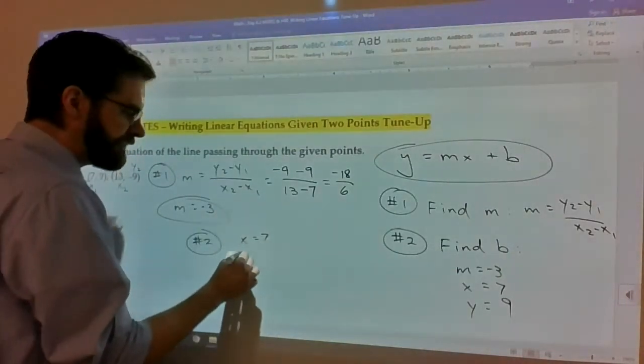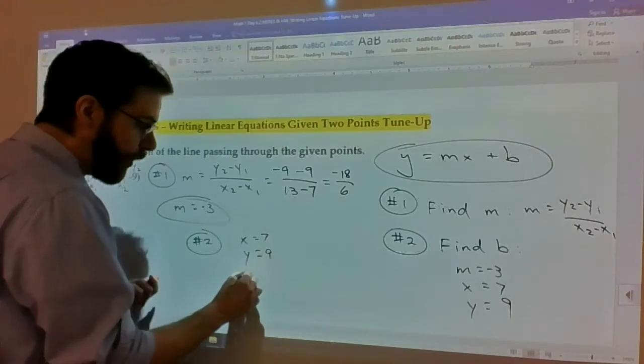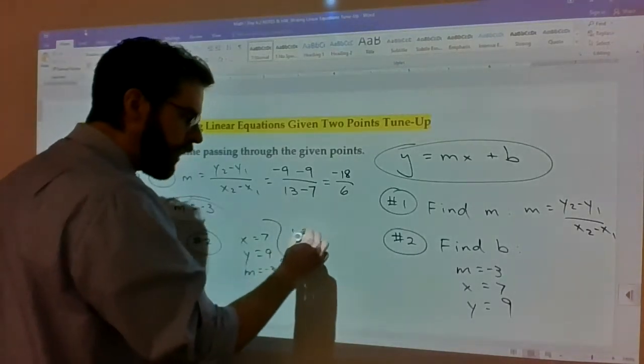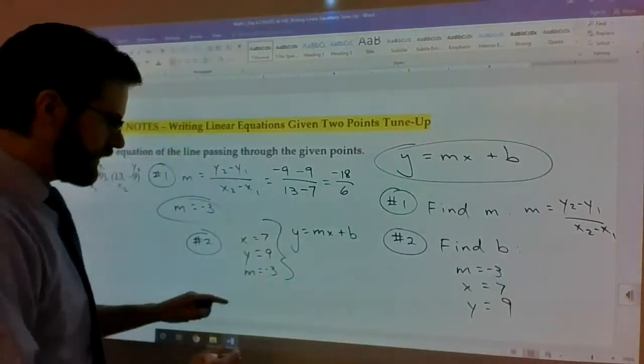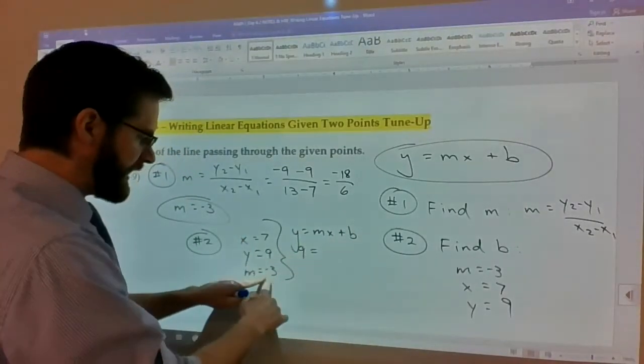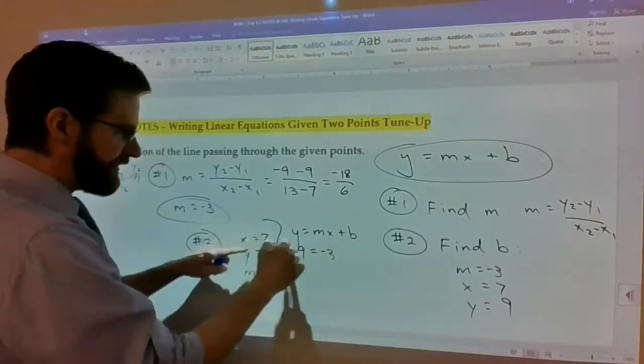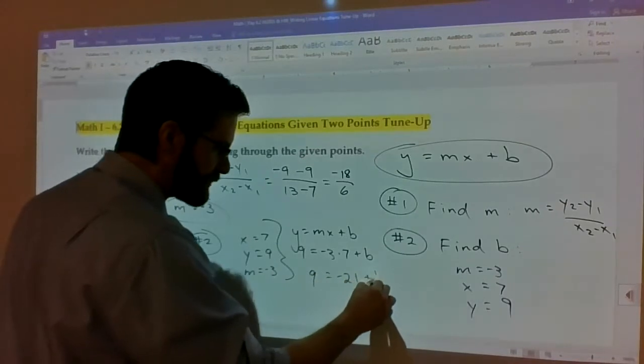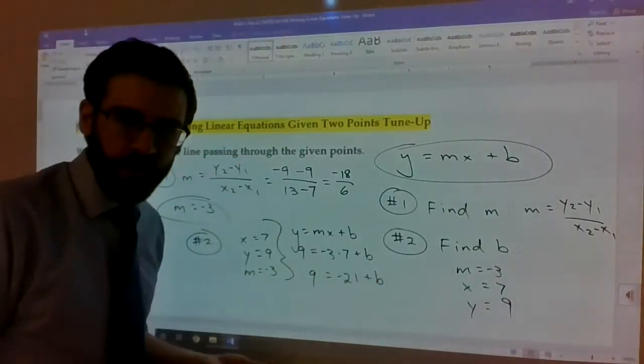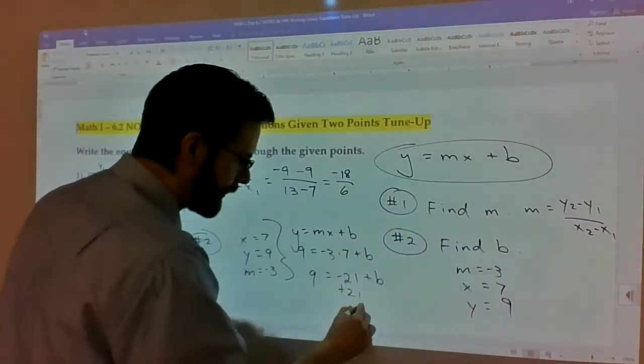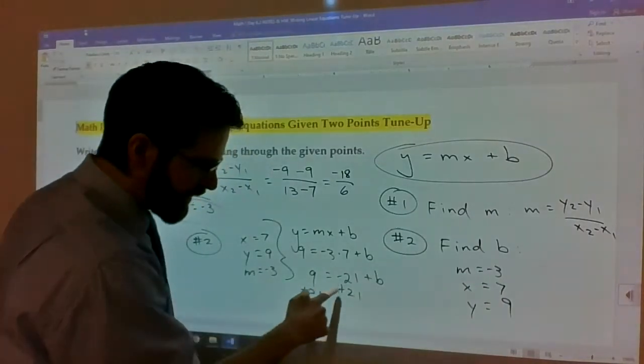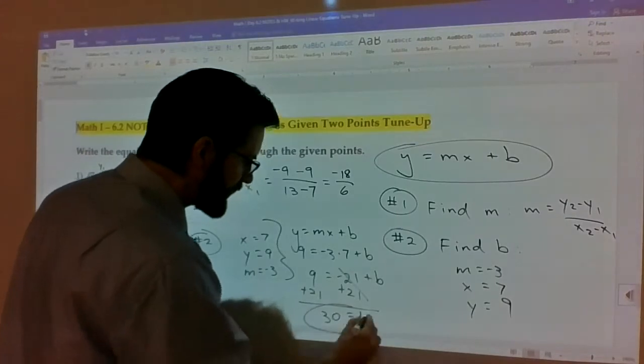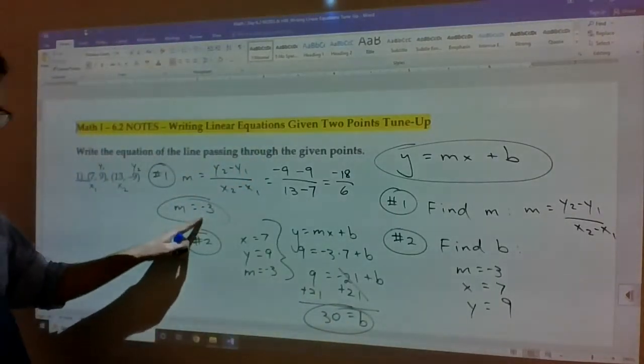So you get negative 18, same sign add, over 13 minus 7 which is 6. This one turned out to be a nice neat whole number. m is equal to negative 3. Step one done. So now we know y equals negative 3x plus b. Now we got to find b.